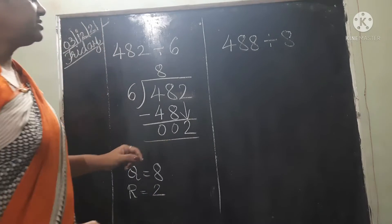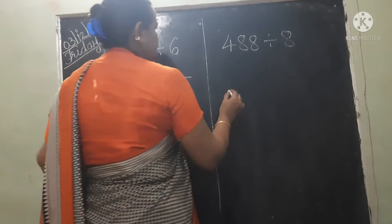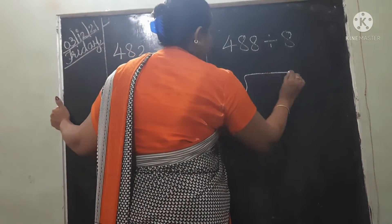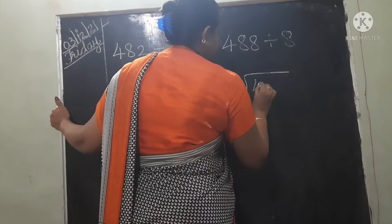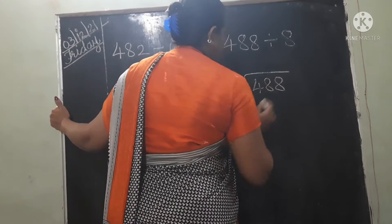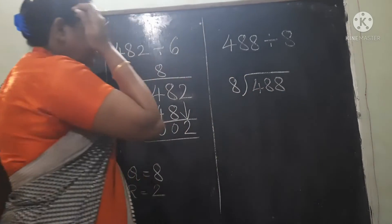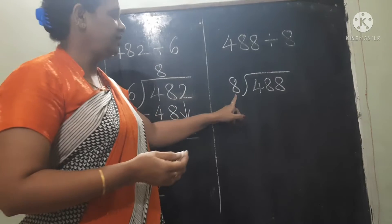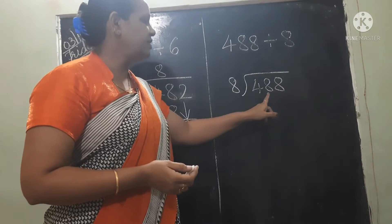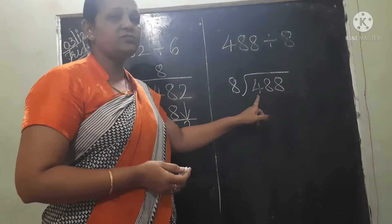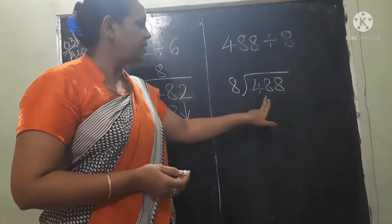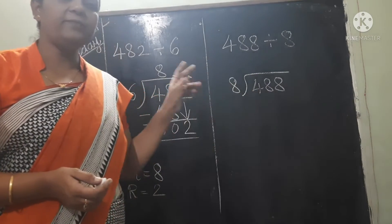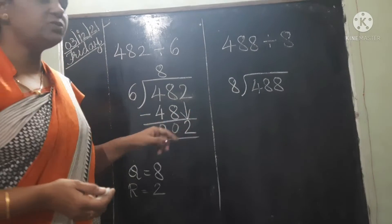Now the next one: 8 divides 488. Again the divisor is big and the dividend single digit 4 is small, so again we have to take 2 digits.